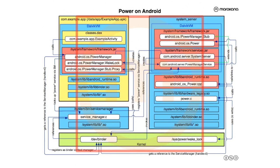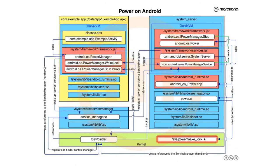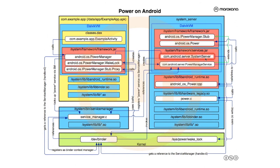Q: Instead of mapping all calls onto kernel wake locks, the PowerManager service actually maintains all the user-space wake locks and holds a single wake lock called 'PowerManagerService' in the kernel, releasing it only if there are no user-space wake locks outstanding — essentially multiplexing all user-space wake locks onto one kernel wake lock. A: That may well be the case for ICS. Either way, whether it multiplexes or uses app-specific wake locks, the point is that the wake lock state is tracked on the PowerManagerService side so it knows what's currently outstanding.